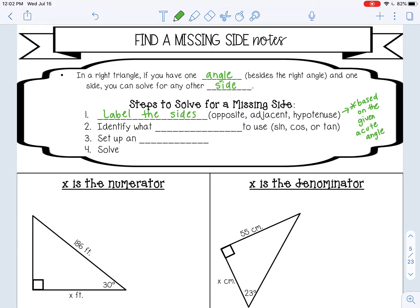Next, you want to identify what trig ratio to use - either sine, cosine, or tangent. Number three, you're going to set up an equation. Last, you want to solve for the missing side.